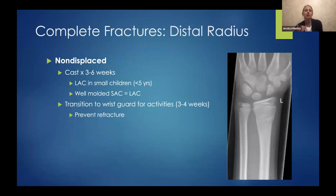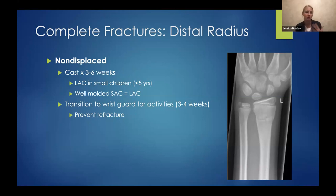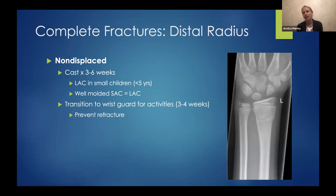Moving on to complete fractures, starting with distal radius non-displaced fractures — cast for three to six weeks. A short-arm cast is fine for older patients; younger patients with chubbier arms may slide out of a short-arm cast, so you may need a long-arm cast. Well-molded short-arm cast is equivalent to long-arm cast for preventing rotational deformity. After the cast, most of my kids go into a wrist guard to prevent refracture — the last thing I want is a patient who returns to activity and refracts.